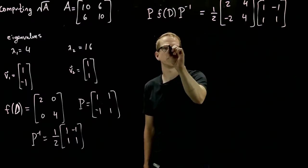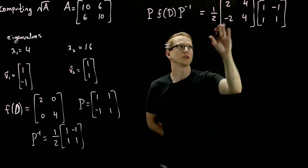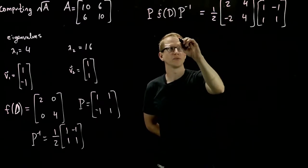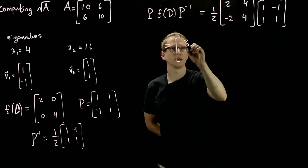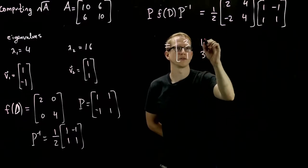And multiplying these matrices out, we get, well, that distributes out, so we can just have 1, 2, negative 1, 2. And when we multiply those, we get 3, 1, 1, 3.